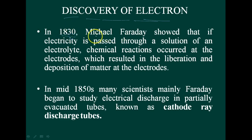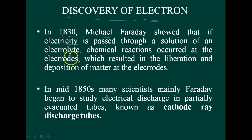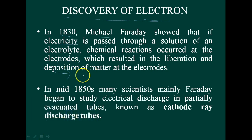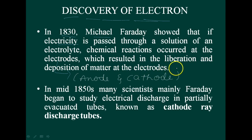In 1830, Faraday showed that if electricity is passed through a solution of an electrolyte, a chemical reaction occurs at the electrodes — that is, at the anode and cathode — which results in the liberation and deposition of matter at the electrodes.